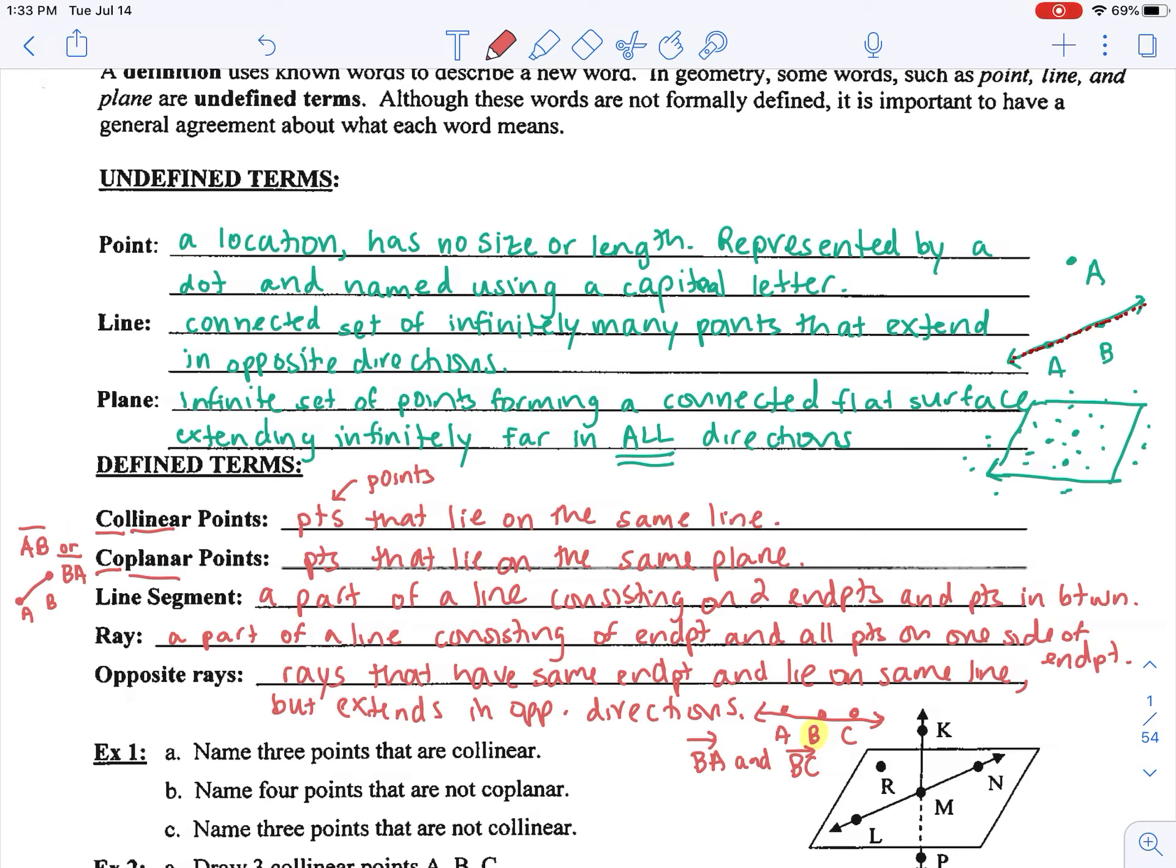For a line, the correct notation would be line AB with an arrow above the two points, any two points that are on that line. So line AB or you can also say line BA and those would mean the same thing. The way we would properly name a plane is there's usually a cursive letter up on the top. Let's say there's W there. That would be plane W.